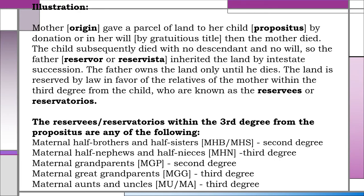Example: Mother gave a parcel of land to her child by donation or in her will, then the mother died. The child subsequently died with no descendant and no will, so the father inherited the land by intestate succession. The father owns the land only until he dies. The land is reserved by law in favor of the relatives of the mother within the third degree from the child, known as the reservatarius. In this case, the reservatorius within the third degree from the propositus are: 1. Maternal half-brothers and half-sisters (second-degree relatives). 2. Maternal half-nephews and half-nieces (third-degree relatives). 3. Maternal grandparents (second-degree relatives). 4. Maternal great-grandparents (third-degree relatives). 5. Maternal aunts and uncles (third-degree relatives).